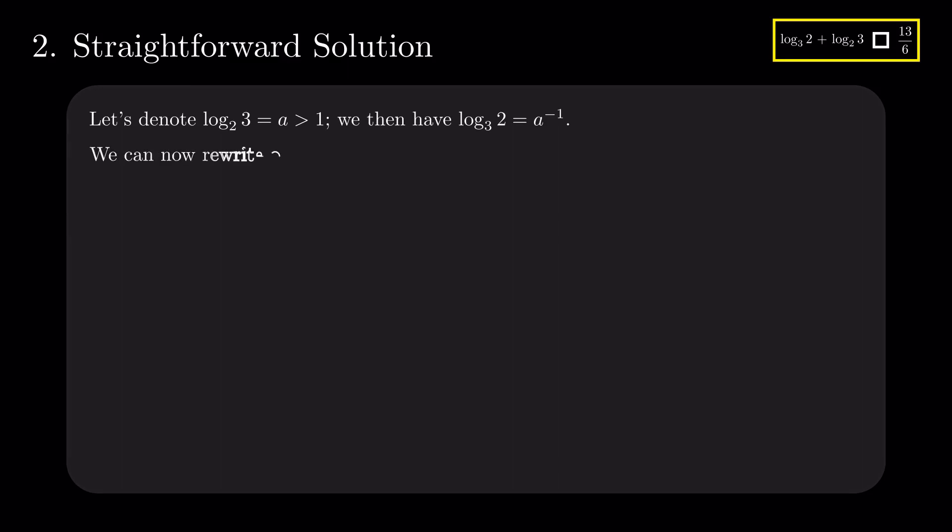We can now rewrite our comparison as a plus a to the power of minus 1 compared to 13 divided by 6. Multiplying by a preserves the direction of the inequality since we know that it is positive. Bring everything to one side and we are just left to compare a second degree function in a with 0.